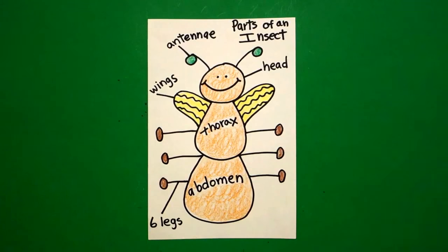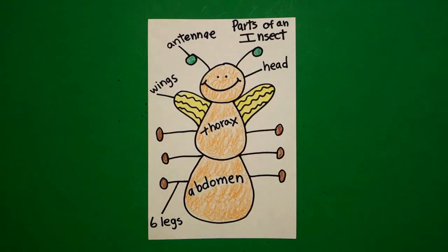Let's see what this looks like all colored in. Here's my parts of an insect all colored in so that you can be the scientist and label it. Okay, bye-bye.